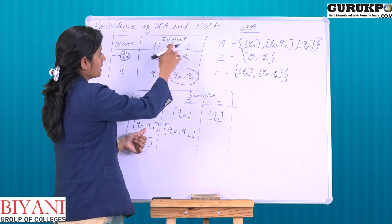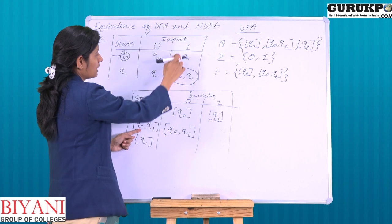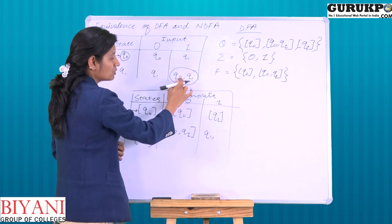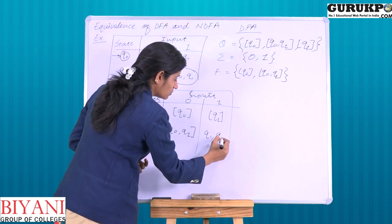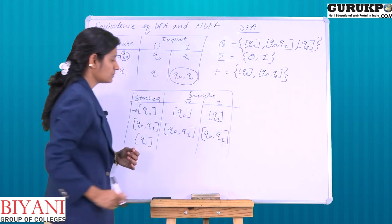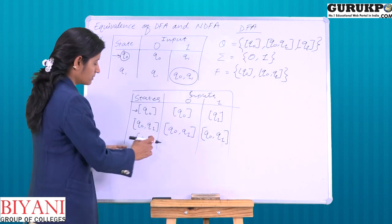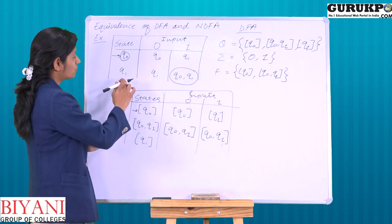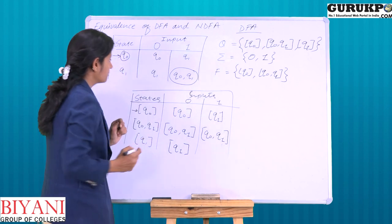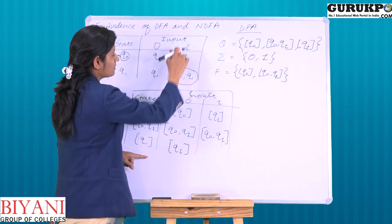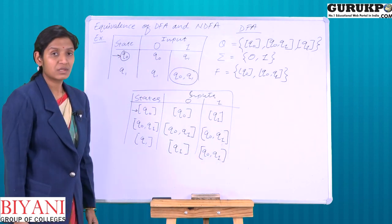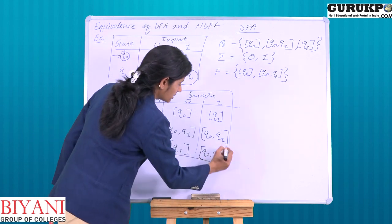For input 1, Q0 on 1 goes to Q1, and Q1 on 1 goes to Q0 and Q1. So the combined result is Q0 Q1. For Q1, on input 0 we go to Q1, and on input 1 we also go to Q0 Q1.